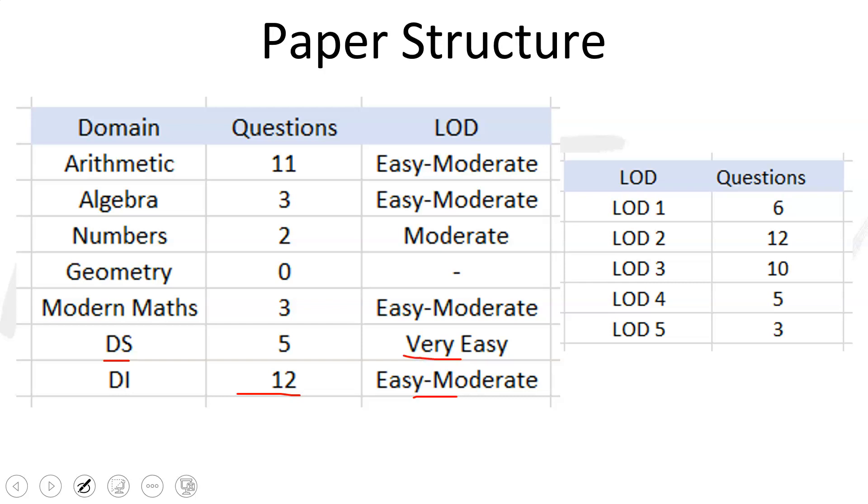Out of these five data sufficiency questions, four were from number system and one was from percentage change. All of those five were very, very easy. Modern maths had one probability and two P&C, two probability, one P&C, and three questions total. Again, level of difficulty was easy to moderate. Modern maths is a chapter where difficult questions can come, but here again the questions were easy to moderate. Geometry and mensuration had no questions at all.